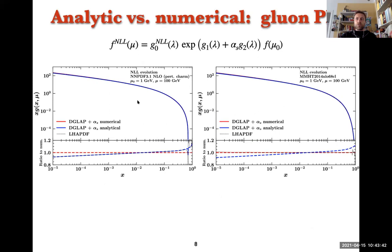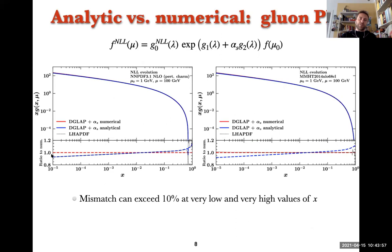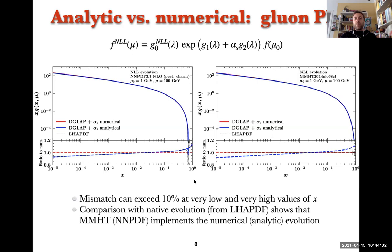The two plots show the NLL evolution of the gluon PDF from 1 to 100 GeV for MMHT (right) and NNPDF (left). The inset shows the ratio with respect to the numerical solution; the mismatch can exceed 10% at very low and very high x. Comparing with native evolution from LHAPDF as a dotted line: MMHT implements numerical evolution (the dotted line follows the numerical result) while NNPDF implements the analytic solution. For perturbative hysteresis in the PDF case, evolving MMHT from 5 GeV to 100 GeV and back to 5 GeV shows a mismatch that can be over 6% for very low x.